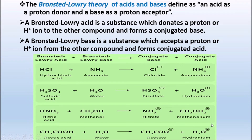So according to Bronsted-Lowry theory, acid is a substance which donates a proton (H+), and base is a substance which accepts a proton. Bronsted-Lowry acid donates a proton and forms conjugated base by giving H+ to the other compound. Bronsted-Lowry base accepts a proton from the other compound (accepts H+) and forms conjugated acid.